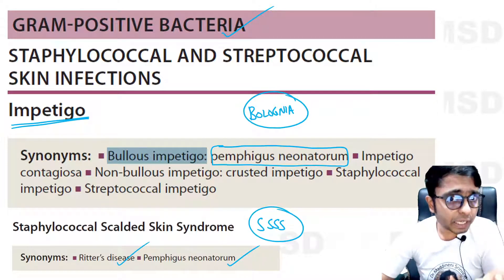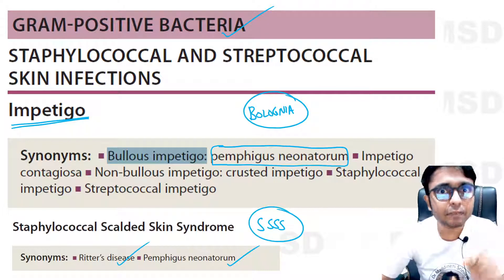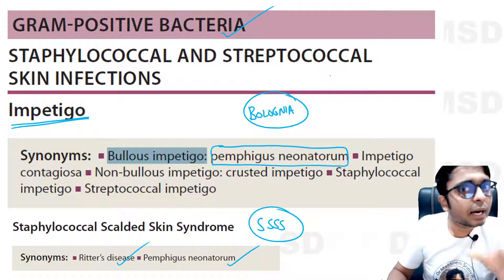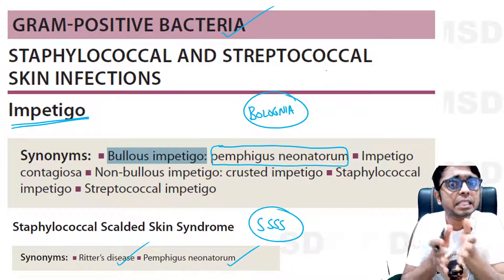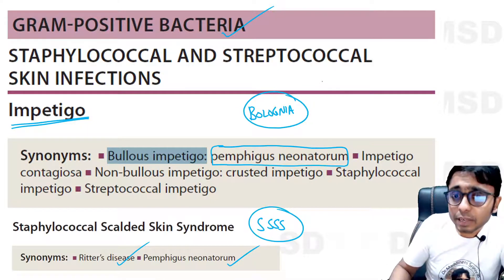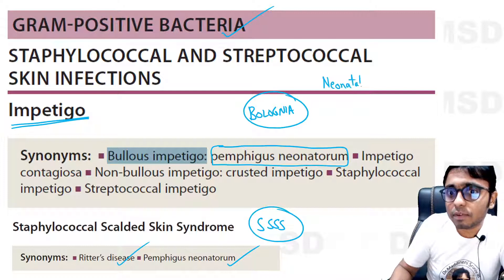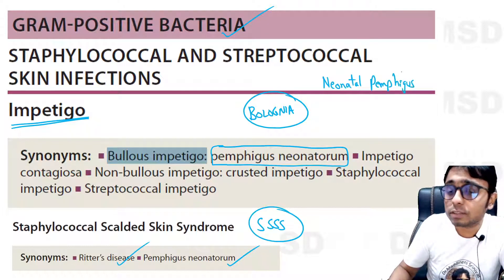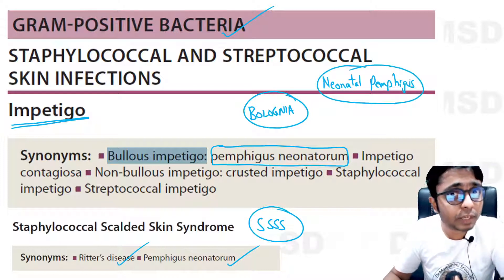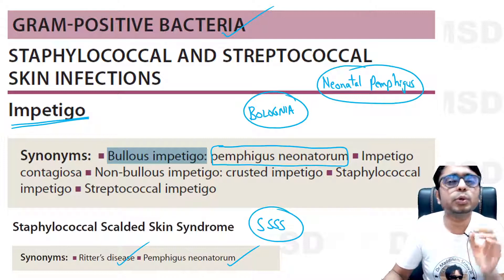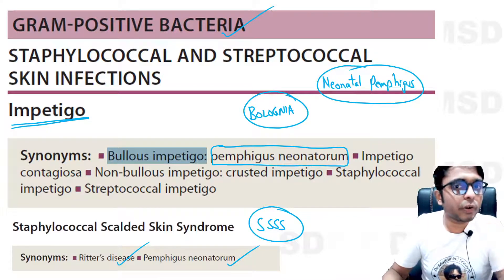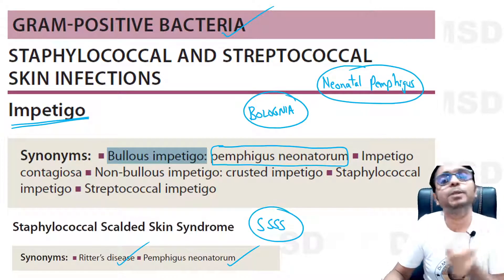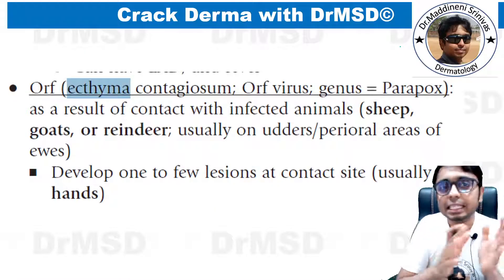This is very, very important: pemphigus neonatorum is not a type of pemphigus — it is a bacterial infection. If it has to be a true pemphigus seen in a newborn, we call it neonatal pemphigus, not pemphigus neonatorum. Both are completely different conditions. Neonatal pemphigus is the type of pemphigus that occurs in newborns due to transfer of autoantibodies through the placenta from the mother.